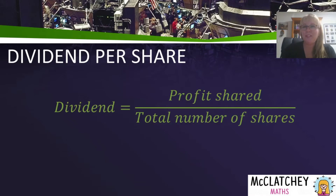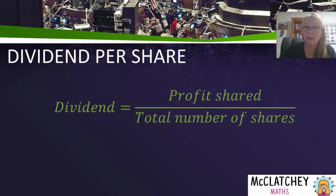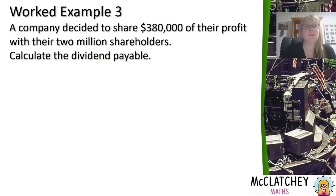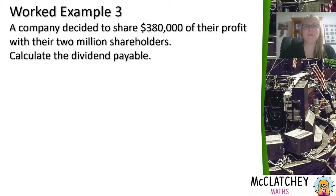We're going to introduce an important formula now — dividends per share. A dividend is that distribution of profit paid out to shareholders at different times throughout the year. The total amount of profit shared divided by the total number of shares gives us the dividend paid to each shareholder per share. This is not a formula you'll find on your formula sheet, so it's one you need to remember.